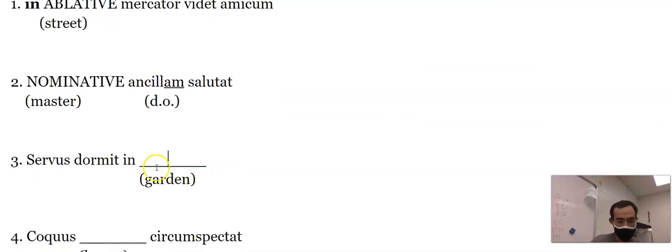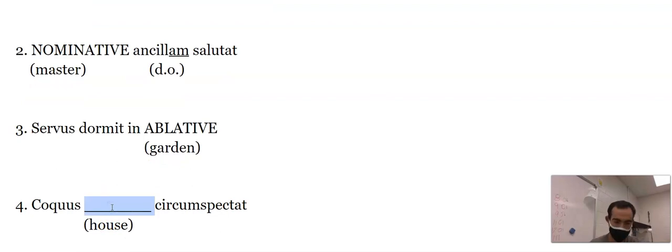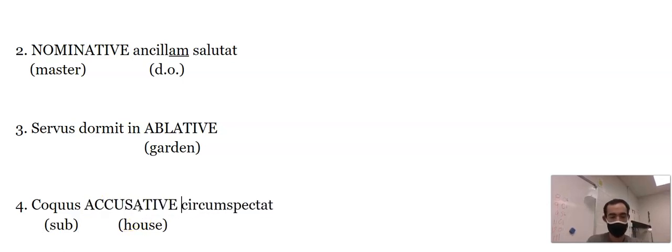Servus dormit in ablative. I don't even need to know what the word is. I see ablative. Horto would be the ablative form of garden, but that one's just going to be ablative. Coquus, circumspectat, and then I got something house. Coquus with the U.S., that's nominative. I know that this is my subject here. I'm going to put 'sub,' and then this will be direct object. This is accusative because I'm missing something that – what's the cook looking around? It's got to be the house.